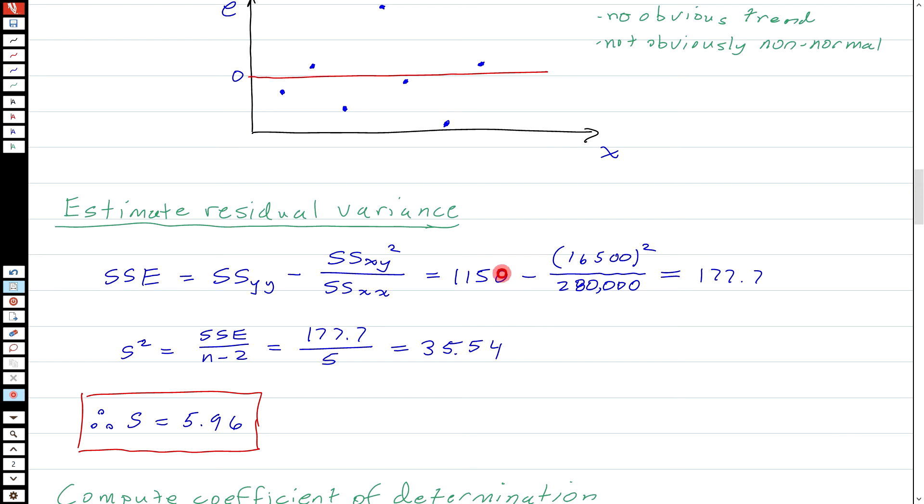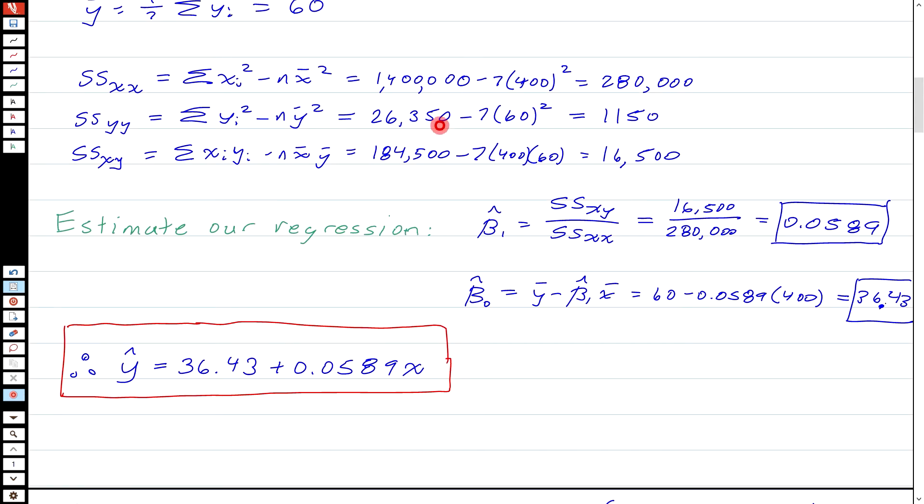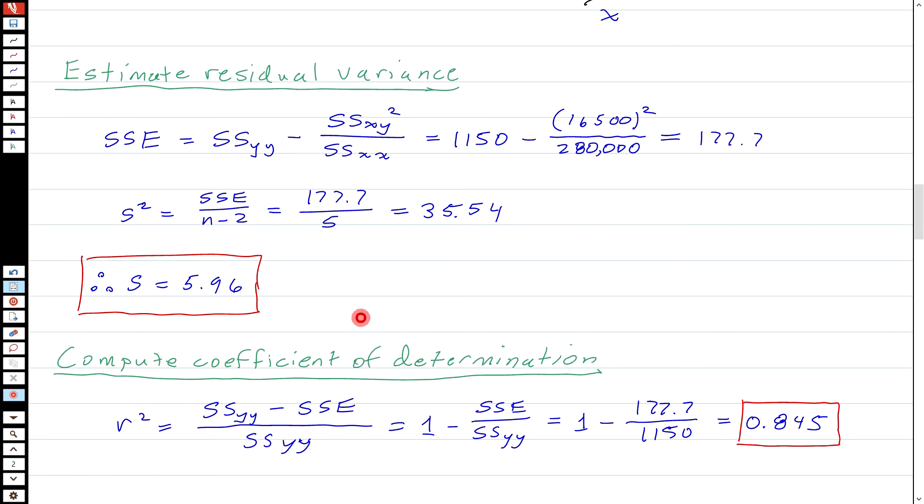Now let's look at some of the variability issues. The residual variance is obtained as S squared. For that, I need SSE. And SSE is SSYY minus SSXY squared over SSXX. And I have all those quantities up here. I computed them up here. So I just plug in the numbers and I get SSE is 177.7. And then the S squared is SSE divided by N minus 2. N in this case is 7, so N minus 2 is 5. SSE we just computed as 177.7, and that gives me 35.54 for S squared. And if we want S itself, which is the standard deviation of my residuals, is 5.96.